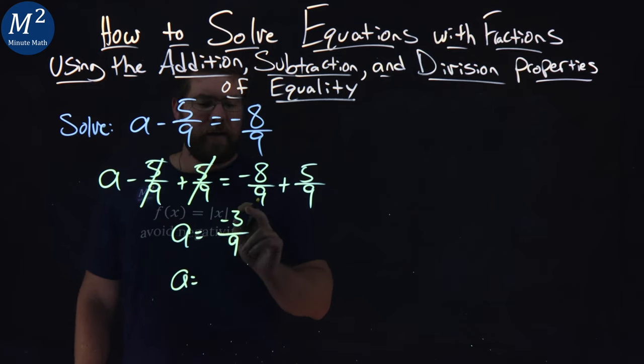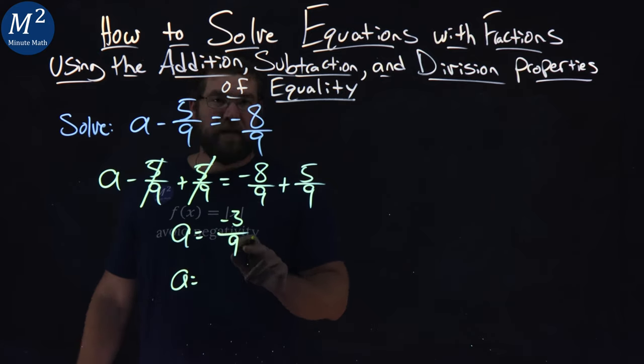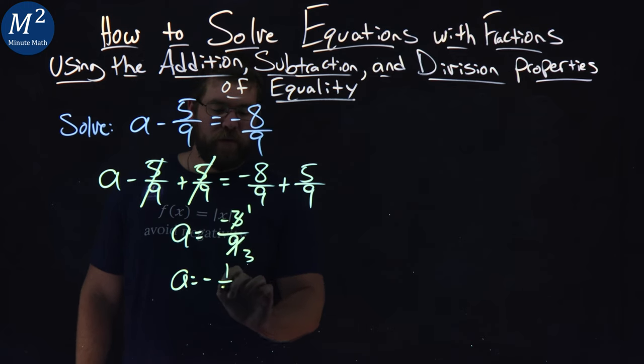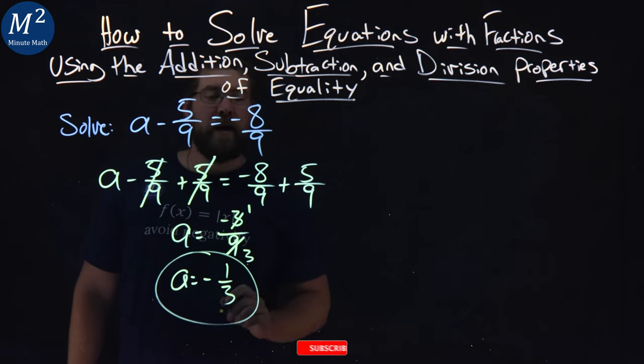Now, can we simplify negative 3 over 9? Yes, 3 goes into both of them. 3 divided by 3 is 1, 9 divided by 3 is 3. So negative 1/3 is our answer.